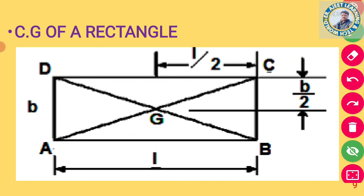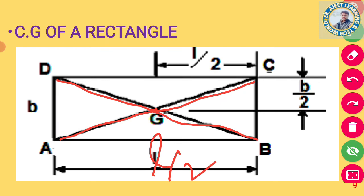Rectangle का center of gravity — इसके diagonals को मिला देते हैं तो जो middle point मिलता है, that is the center of gravity. इसके अलावे, length का half यानी b/2 करके भी center of gravity मिल जाता है।